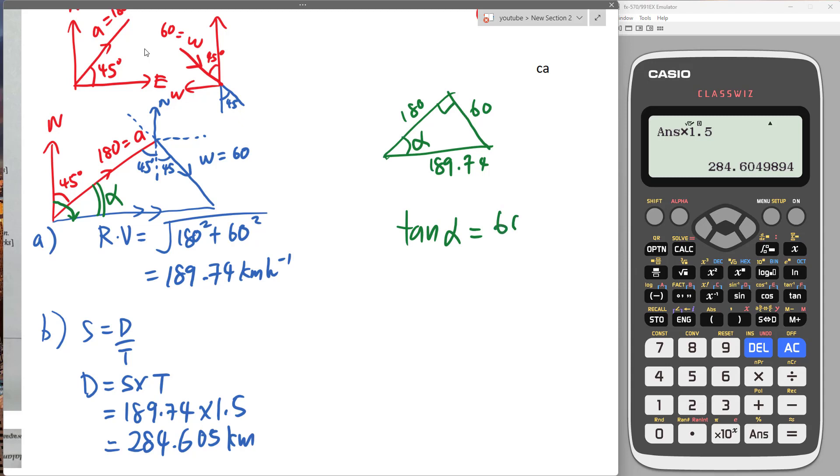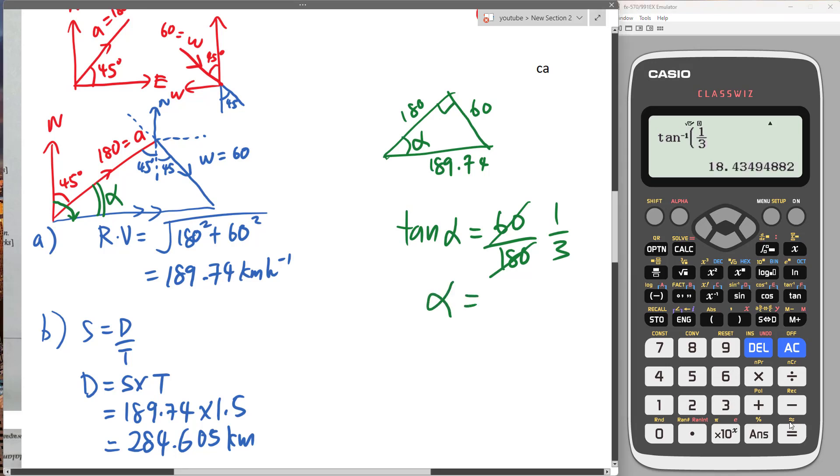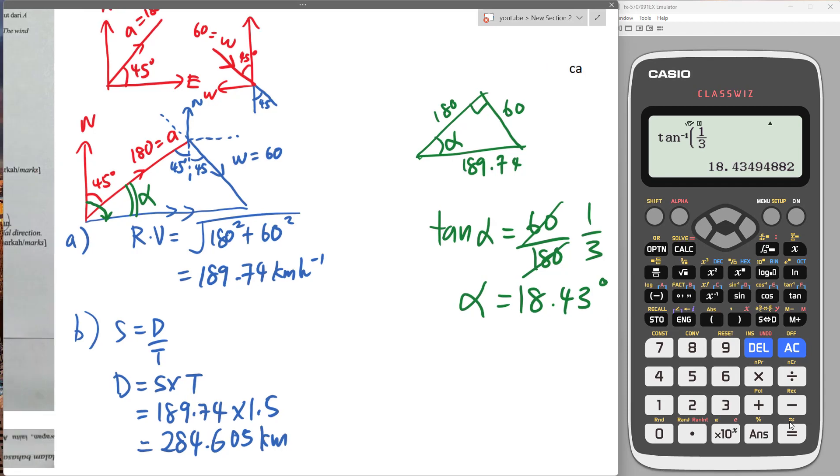Over here, I'll just use tangent alpha. It's opposite over adjacent, which is 60 over 180. Simplified, this should be 1 over 3. Then I can use the calculator: shift tangent, 1 over 3. Then I get my alpha. The difference in angle should be 18.43 degrees. This is the difference in angle.